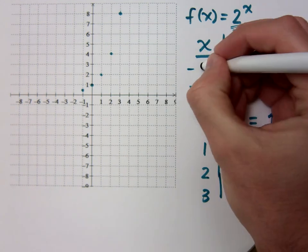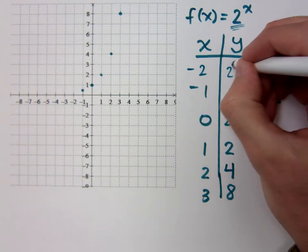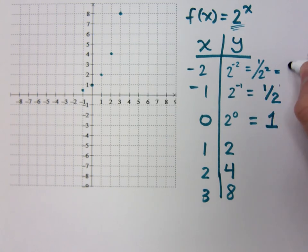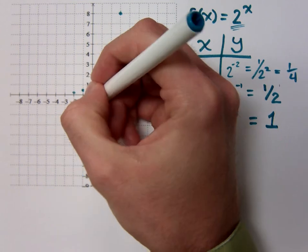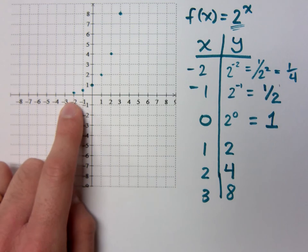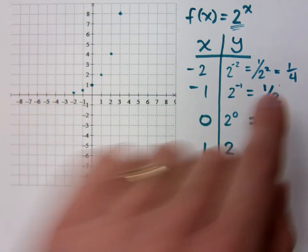And if I did x equals negative 2, that would give me 2 to the negative 2, which is just 1 over 2 squared, and I get 1 fourth. So you see what's going to happen here is that the larger the negative exponents are, the closer I'll get to what? To the x axis.